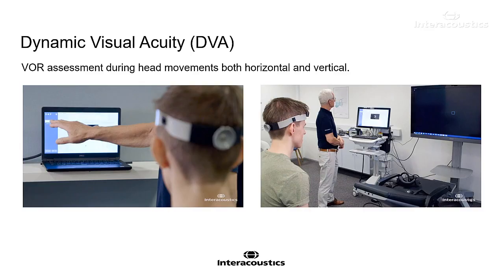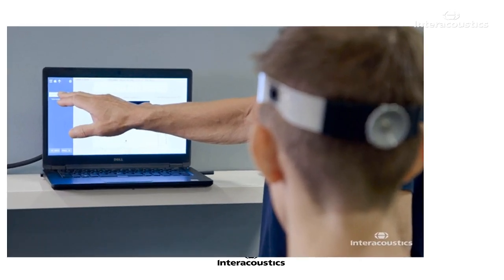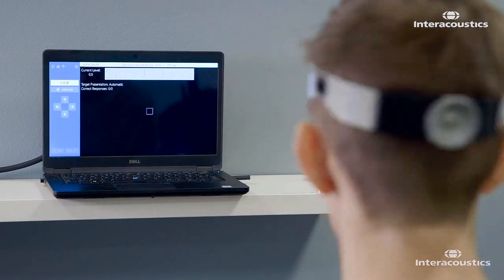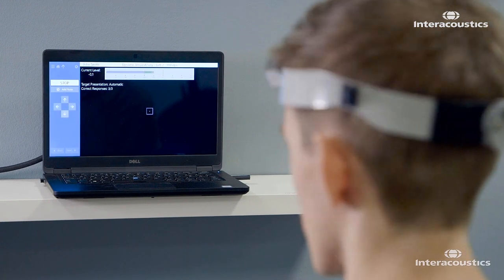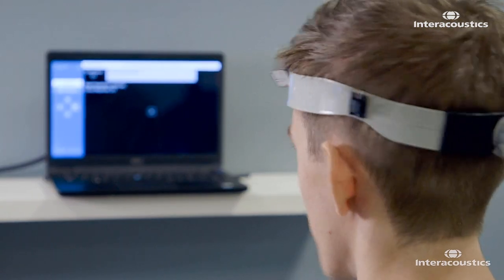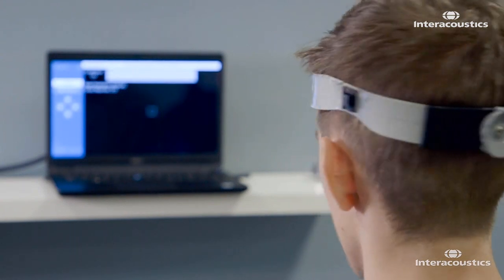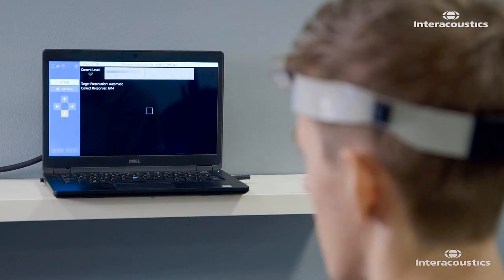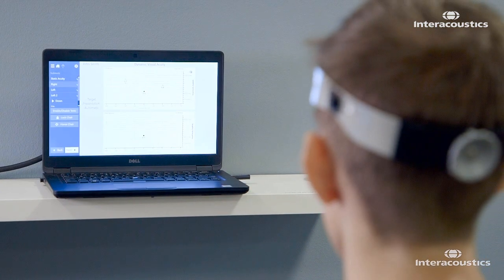In the computerized system of dynamic visual acuity, the patient wears a headband with a small sensor attached. The software outputs a metronome sound, and the patient is instructed to move their head to that beat while the clinician guides them. When the patient gets their head into the correct movement — the sweet spot — a small optotype pops up on the screen. The patient then tells us which direction that optotype is pointing. This can be done on a small laptop screen if you're limited in space.